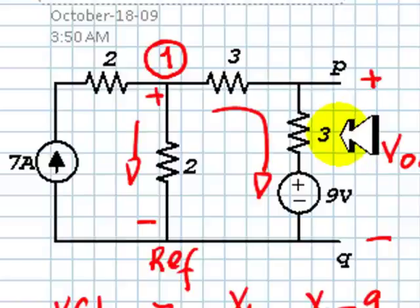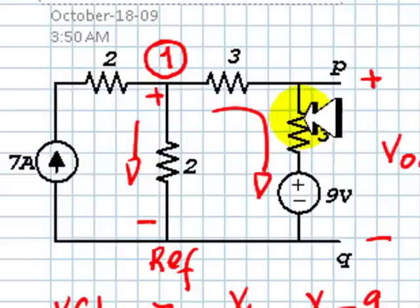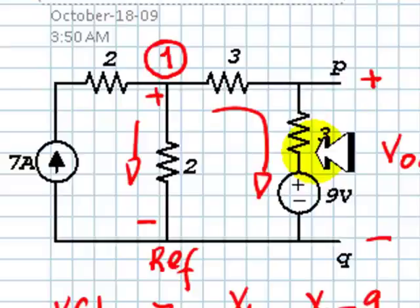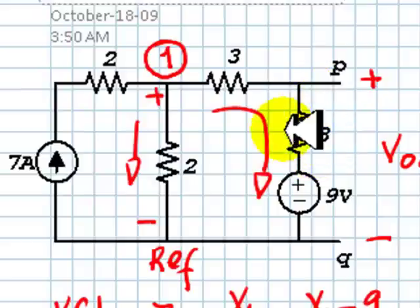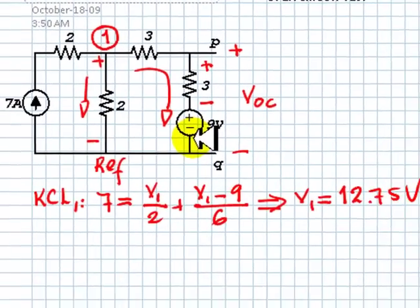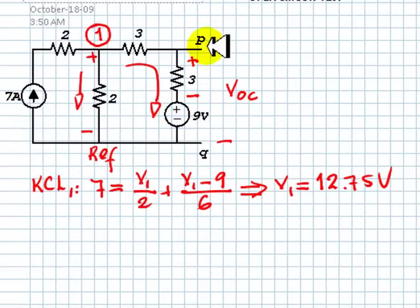How do we find the voltage in a resistor? We use Ohm's law. V equals R I. We need the current I in this resistor, but that current is the current in this branch, which is V1, 12.75 volts, minus 9 divided by 6. That is the current. If we multiply that current times 3, we have the voltage in this resistor. And the polarity is, of course, the current is flowing like so. The polarity of the voltage in that resistor is like so. So, the voltage of P with respect to Q is 9 volts, plus this drop in this resistor.